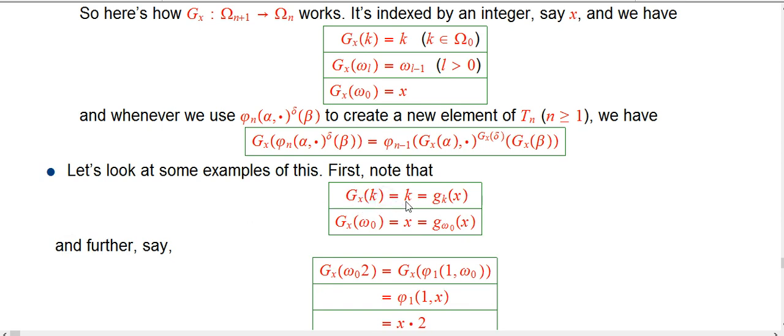G sub x of k being the same thing k. Hey, you know, we had something, the slow-growing hierarchy, when we just switch our interpretation of where the k and the x go, that's exactly just G sub k of x.